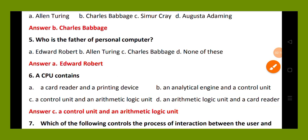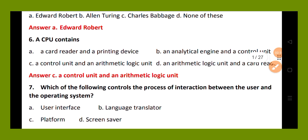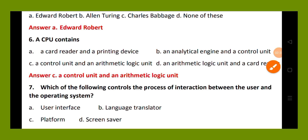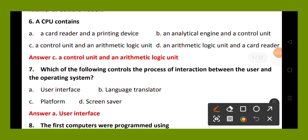Question number 7. Which of the following controls the process of interaction between the user and operating system? Option A, user interface; option B, language translator; option C, platform; option D, screen saver. The right answer is option A, user interface.